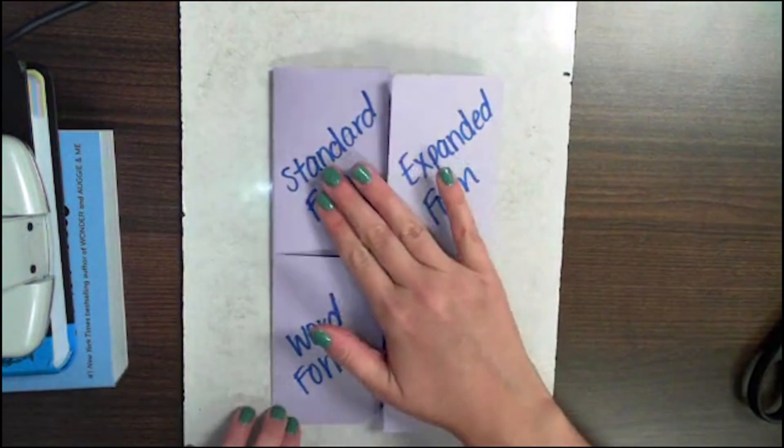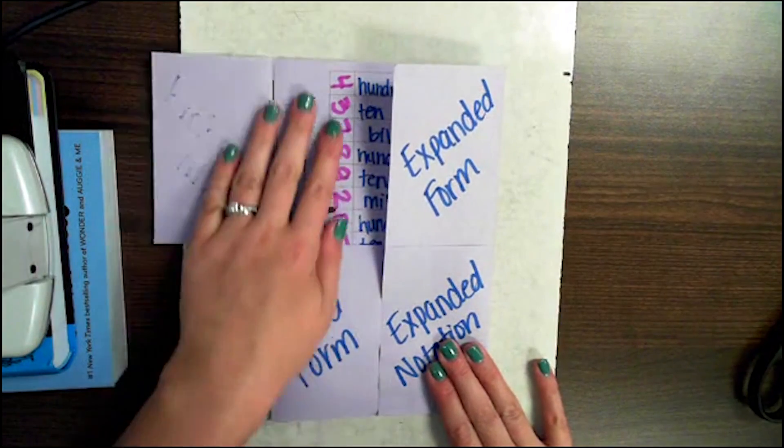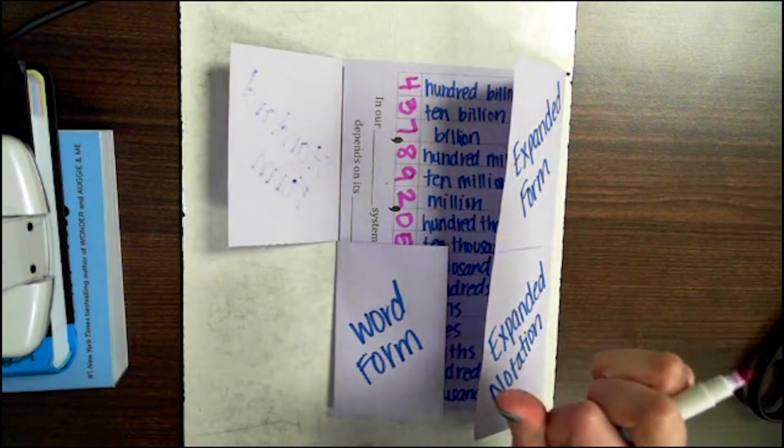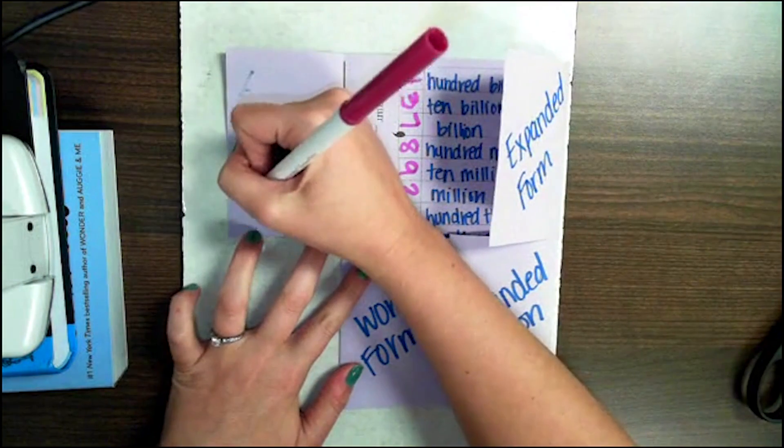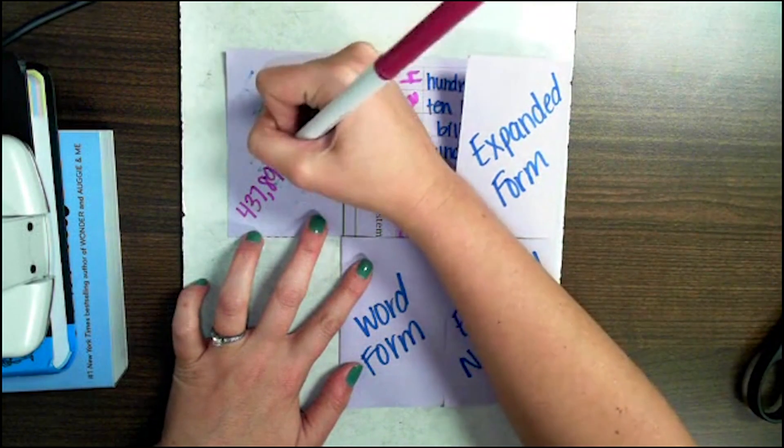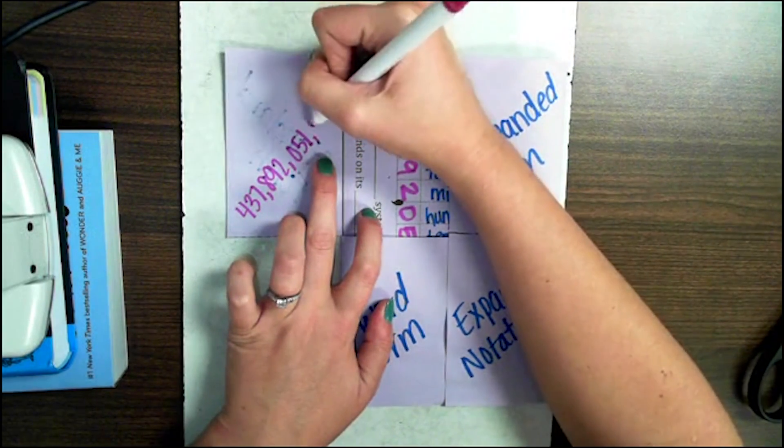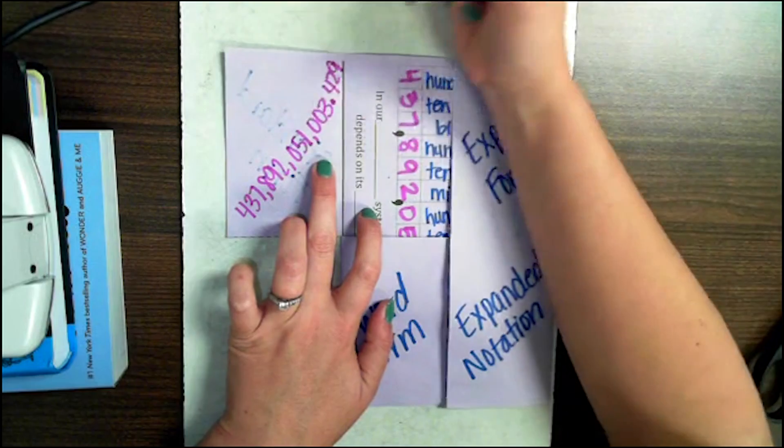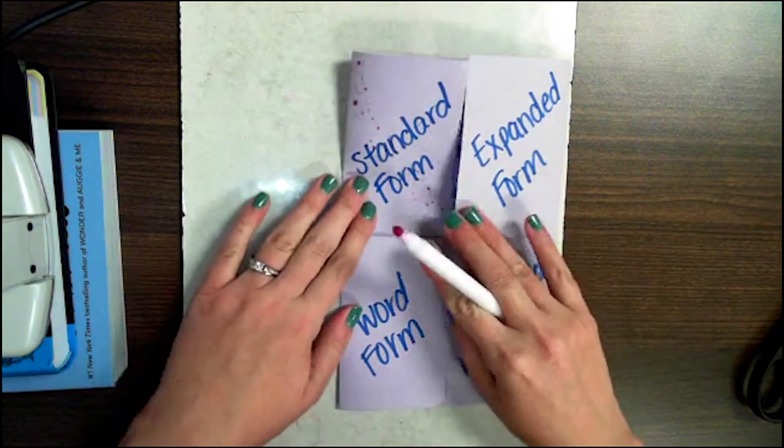Remember, you have standard form, word form, expanded form, and expanded notation. Let's start with standard form. Standard form is just the regular way that you write your number. Nothing fancy. We're going to relook at our number here and just transfer it over. So we have, again, 437,892,051,003 and 429 thousandths. Try to squeeze it in there as best as you can. That's our standard form.